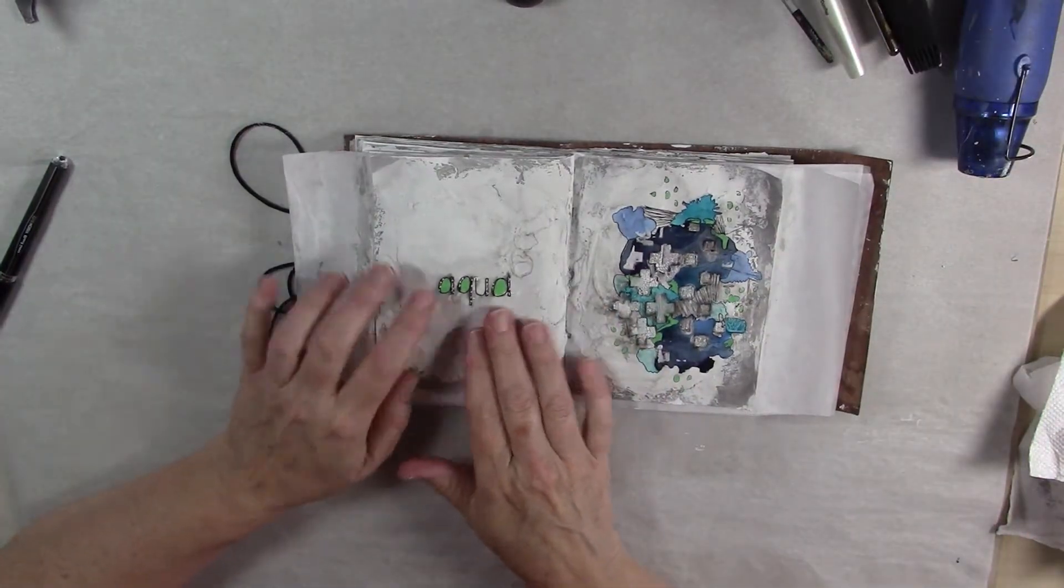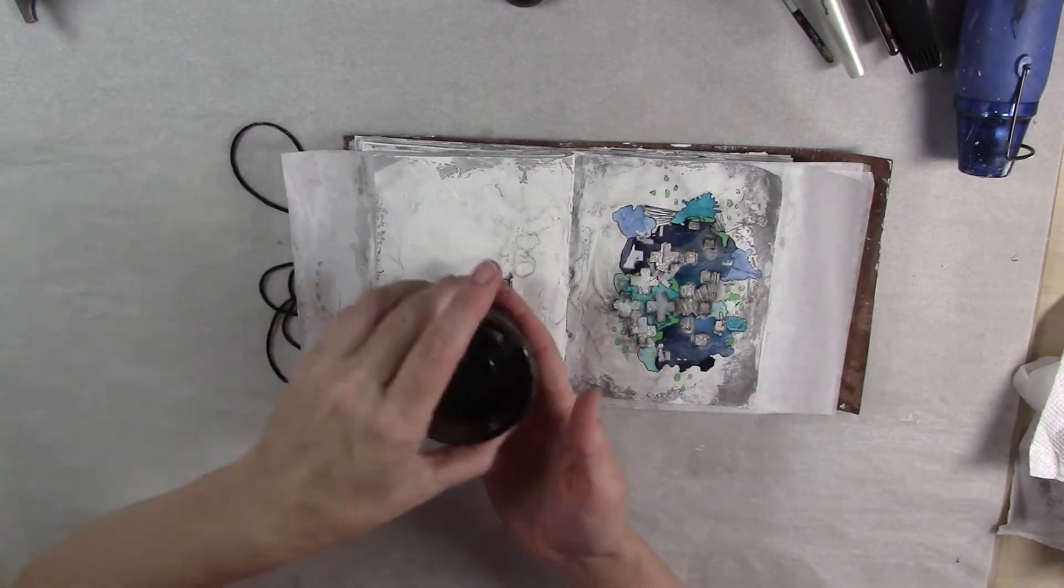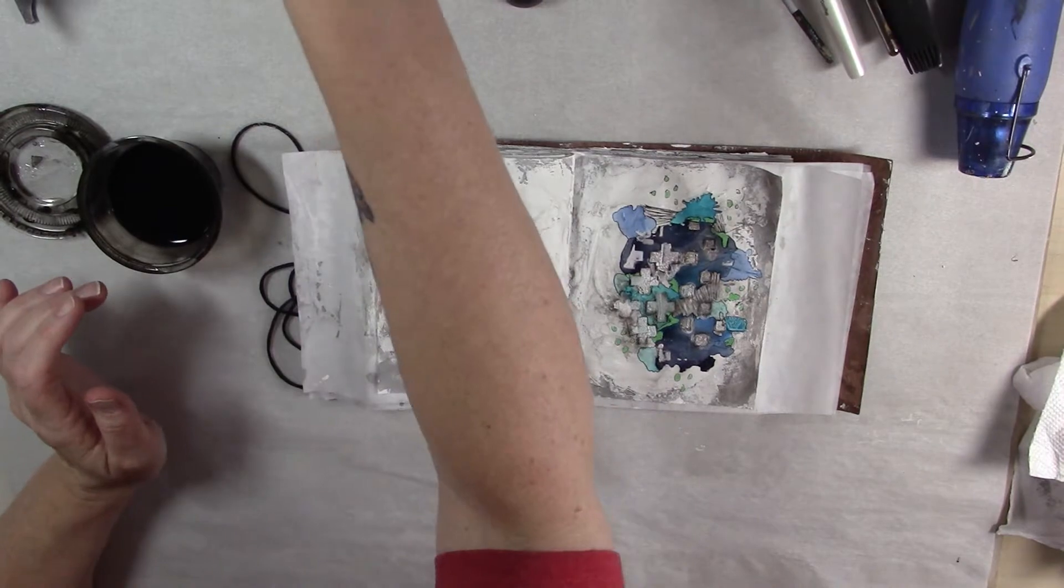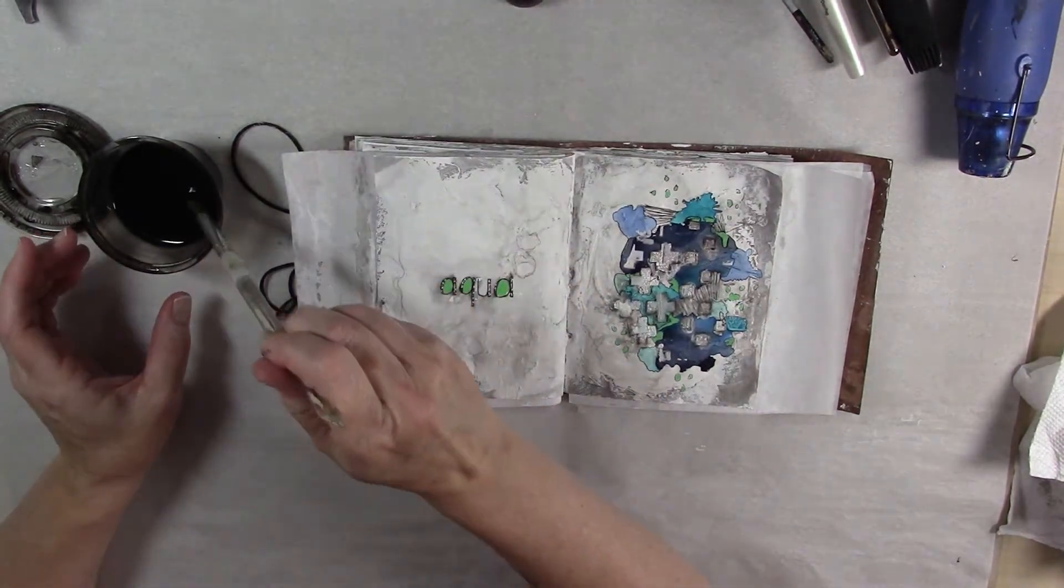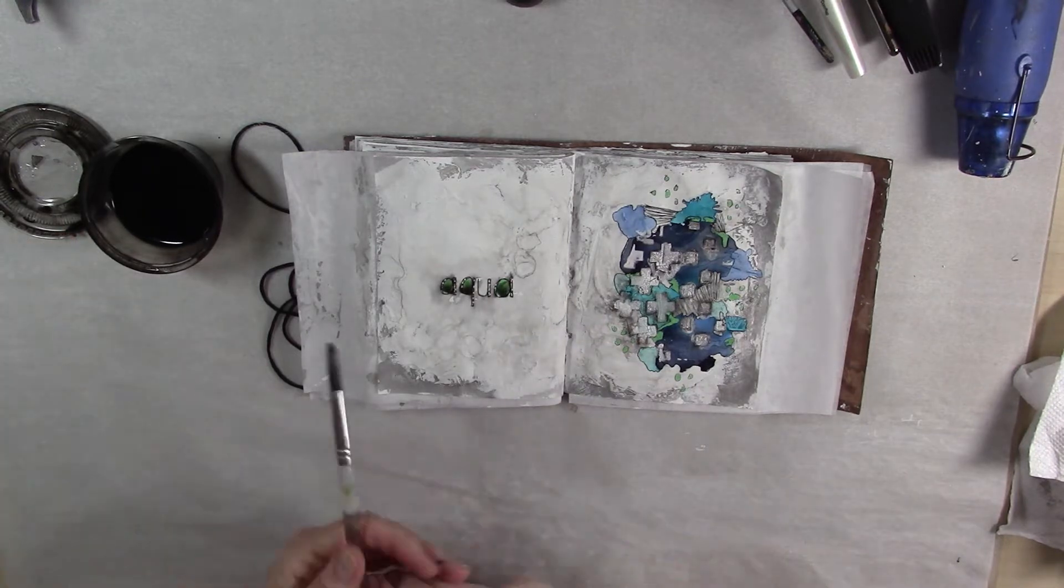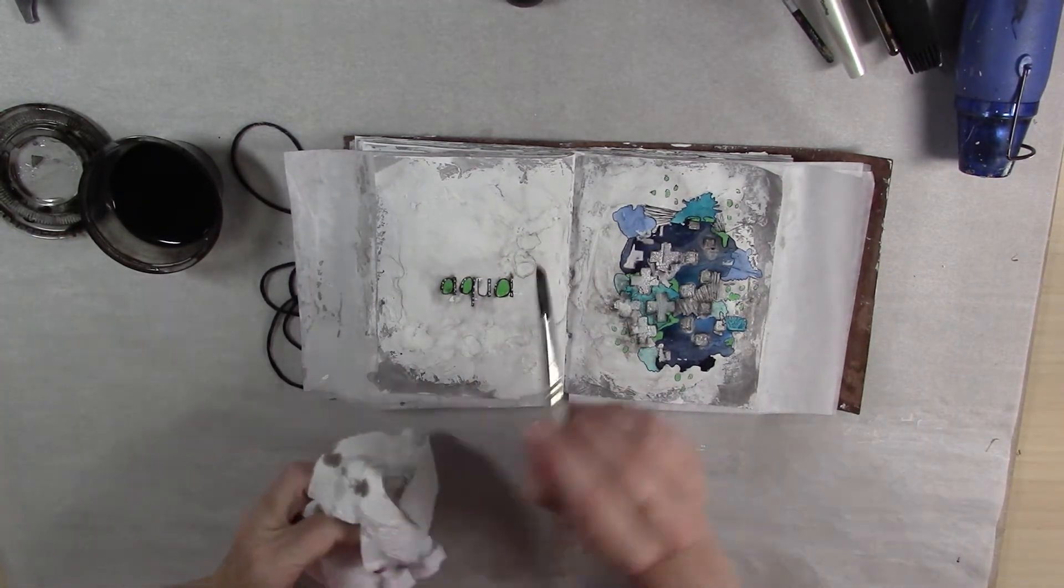And then over here on this side, just because this green is so vibrant on the page, I want to tone that down a little bit. So again, I'm going to take my paint mixture that I had earlier and then just paint inside and dab off because it's really dark when it goes on.